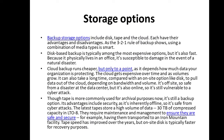Storage options include disk, tape, and the cloud, each with advantages and disadvantages. As the 3-2-1 rule shows, using a combination of media types is smart. Disk-based backup is typically among the most expensive options, but it's fast because it physically lives in an office — though it's susceptible to damage in the event of a natural disaster. Cloud backup runs cheaper, but only to a point depending on how much data your organization is protecting, and it can get expensive over time as volumes grow. It can also take a long time to pull data out of the cloud depending on bandwidth.